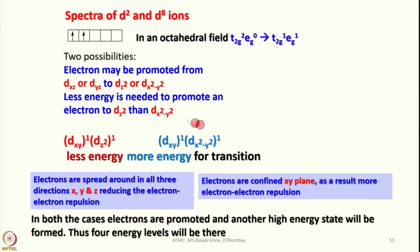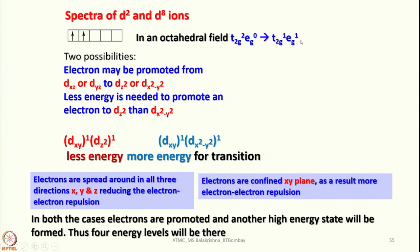Similarly, we can also do analysis for D2, D3, D7, and D8. Consider D2 and D8 — they have similarities because of two electrons and two holes. For one electron in an octahedral field, we have an electronic configuration and the electron goes to the excited state in a certain fashion. Two possibilities exist: an electron may be promoted from Dxz or Dyz to Dz² or Dx²−y².